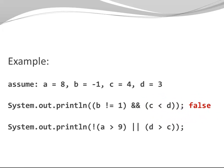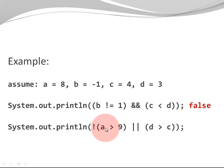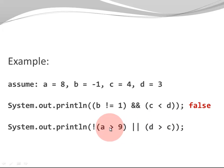Let's look at a second example. Starting with the left-hand operand: A > 9. A is 8, so 8 > 9 is FALSE. But there is a NOT operator that turns FALSE to TRUE, so the left-hand operand is TRUE. Since we have an OR operator, it doesn't matter what the right-hand side is — one of my operands is TRUE, so the overall expression is TRUE. There's no need to evaluate D > C, and yes, the expression is TRUE.